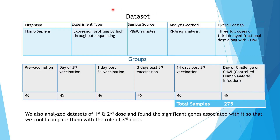Looking at the dataset and the groups: the organism was Homo sapiens and RNA-seq analysis was done. The sample source was PBMC samples. From the pre-vaccination state to the day of challenge, or controlled human malaria infection day, there are a total of six groups, and the number of samples is 275. We also analyzed datasets of the first and second dose and will discuss them later.